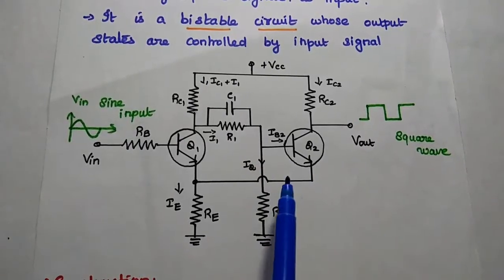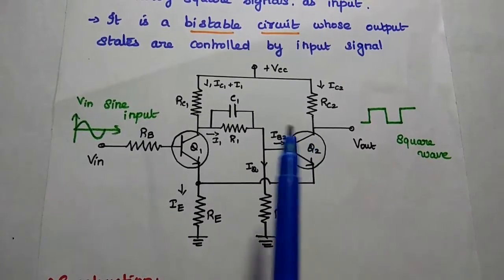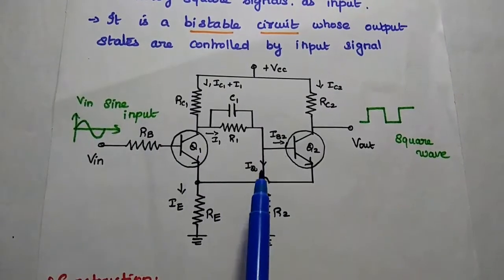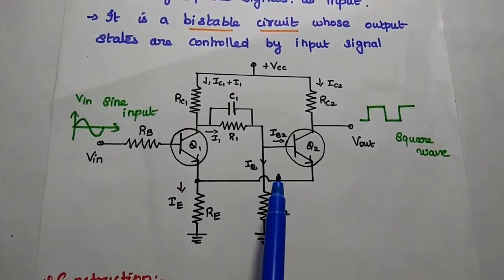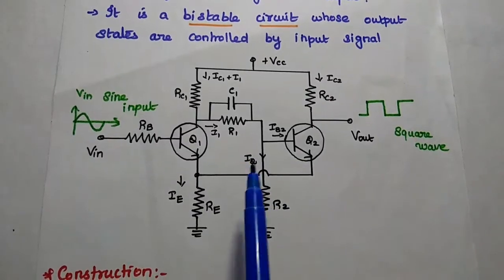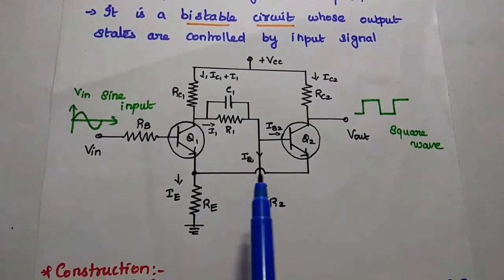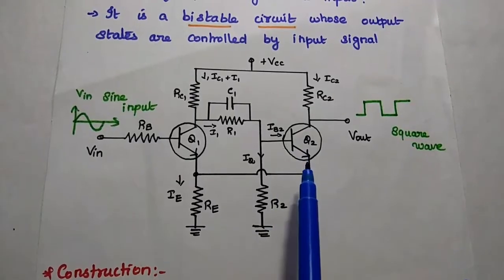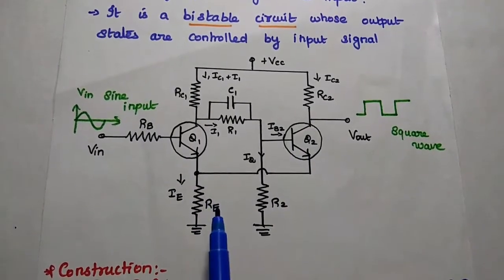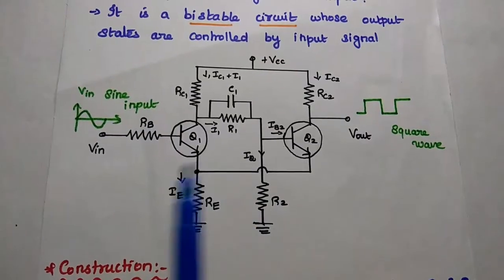Here we are not going to couple the collector of Q2 to the base of Q1 — that is not possible in the Schmitt Trigger. Instead, in the Schmitt Trigger, we are going to create a regenerative feedback path from Q2 to Q1 using this emitter resistance. That is the major difference.